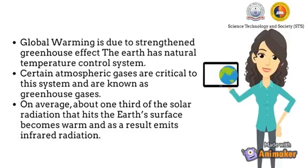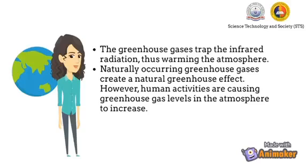Global warming is due to a strengthened greenhouse effect. The Earth has a natural temperature control system; certain atmospheric gases critical to this system are known as greenhouse gases. About one-third of solar radiation that hits the Earth is absorbed and emits infrared radiation. Greenhouse gases trap this infrared radiation, warming the atmosphere. Naturally occurring greenhouse gases create a natural greenhouse effect; however, human activities are causing greenhouse gas levels in the atmosphere to increase.